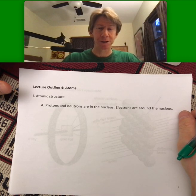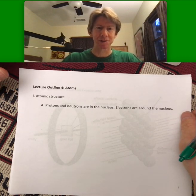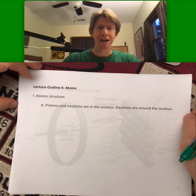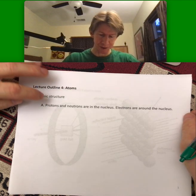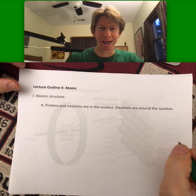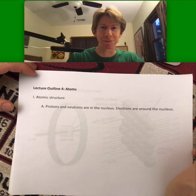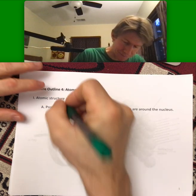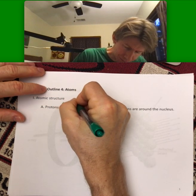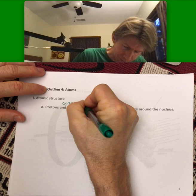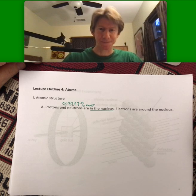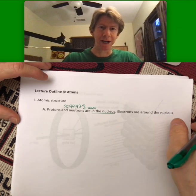We're going to be reviewing a little bit here. We've talked about atomic structure before and the fact that the protons and neutrons are in the nucleus, and in that nucleus there's approximately 99.97% of the mass of an atom. I'm giving you the squiggly equal signs, which means approximately 99.97%. Electrons are around the nucleus.